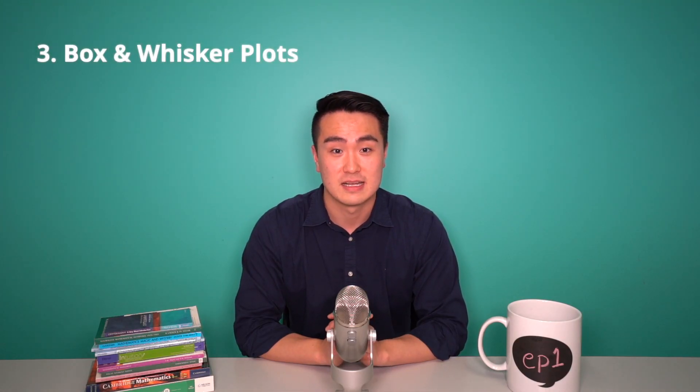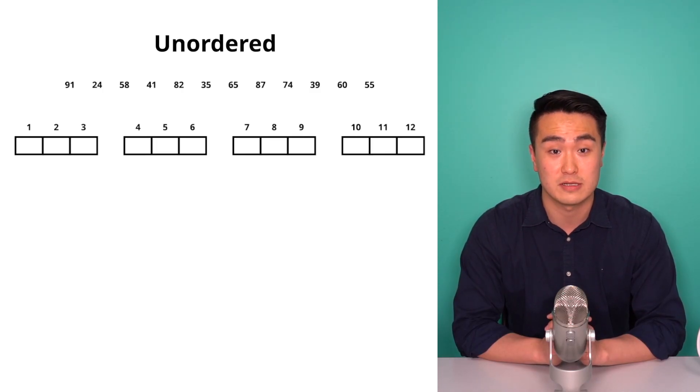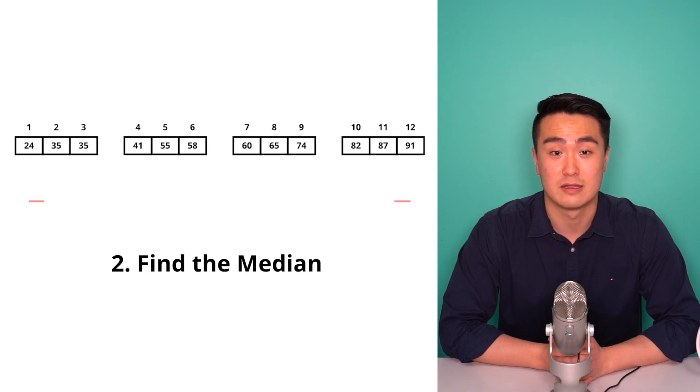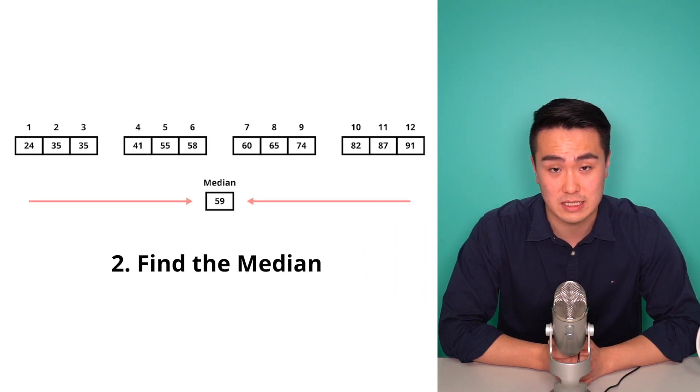Box and whisker plots tell us more about the spread and distribution of numerical univariate data. We can break down drawing the box and whisker plot into four easy steps. 1. Order the data smallest to largest. 2. Find the data point in the middle position, also known as your median.